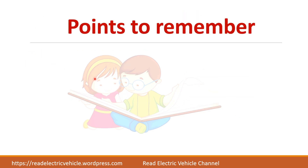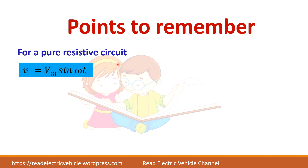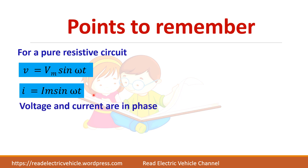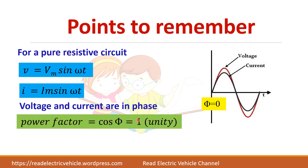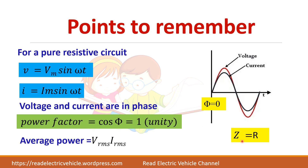Here are the important points for a pure resistive circuit: voltage V = Vm sin(ωt), current I = Im sin(ωt), and voltage and current are in phase because both have the same ωt term. The angle φ = 0, so the power factor is 1. Average power is Vrms × Irms, and impedance Z = R.